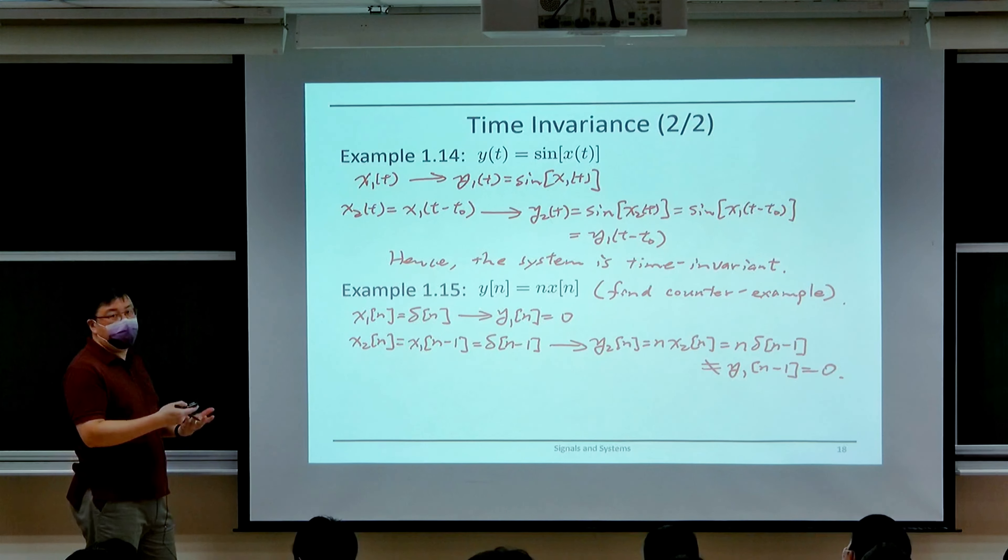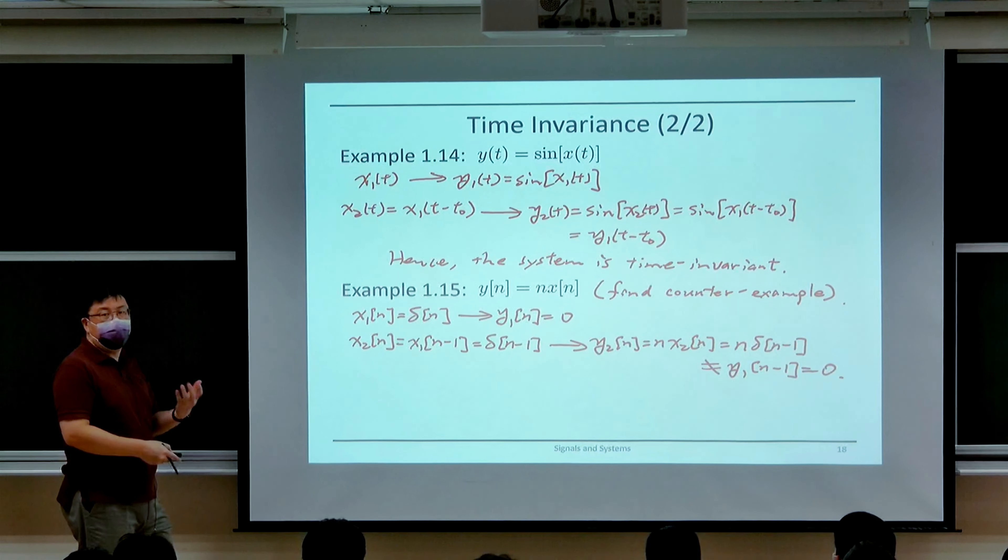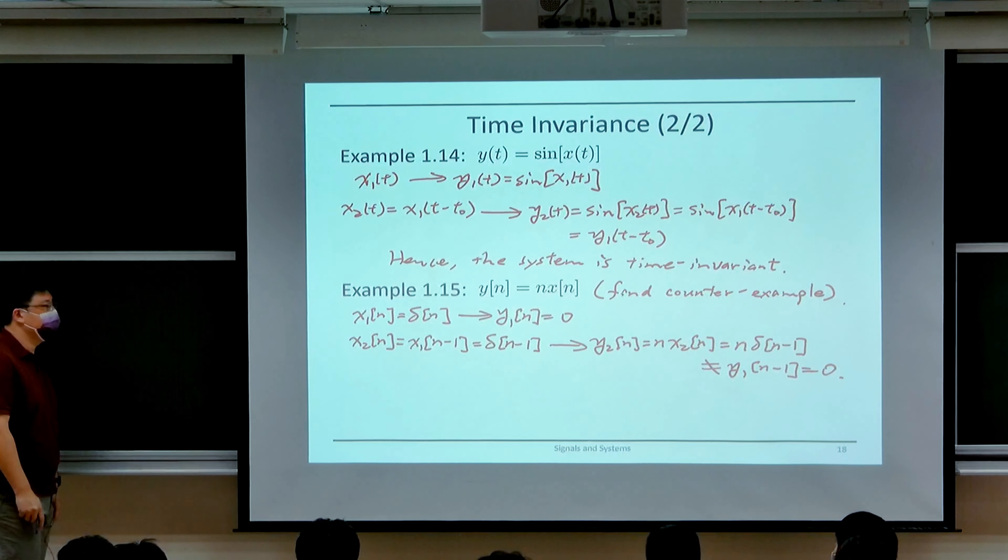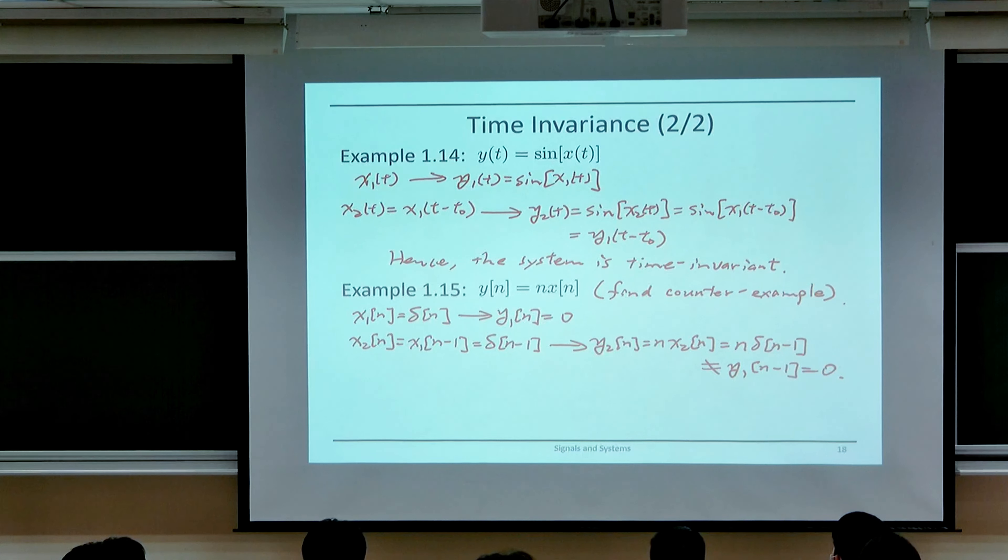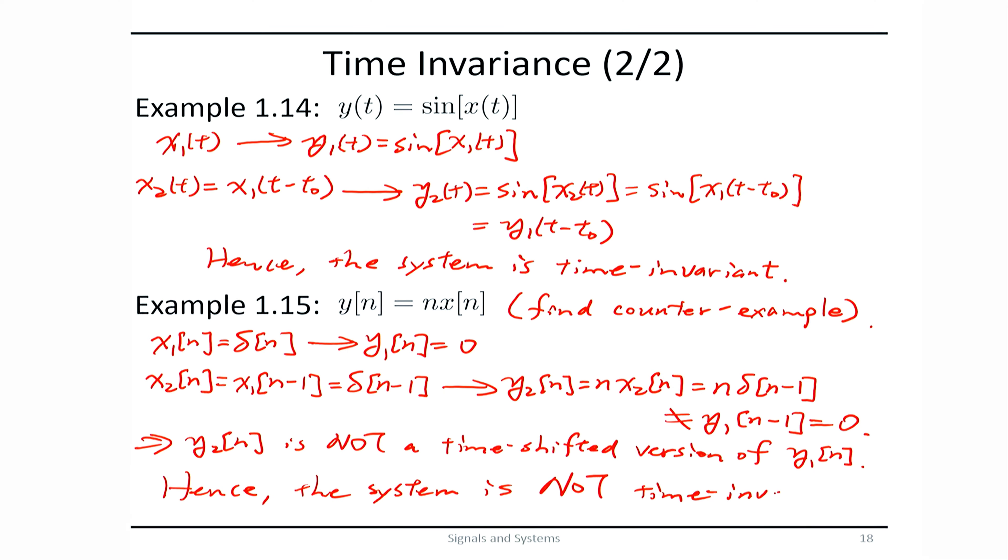So to show that a system is time invariant, you need to prove that this property holds for any input signal. But to show that it is not time invariant, you just need to find a counterexample. Here, since y₂[n] is not a time-shifted version of y₁[n], hence, the system is not time invariant. Or sometimes, we just say that it is time-varying.